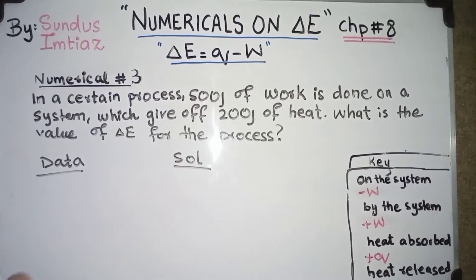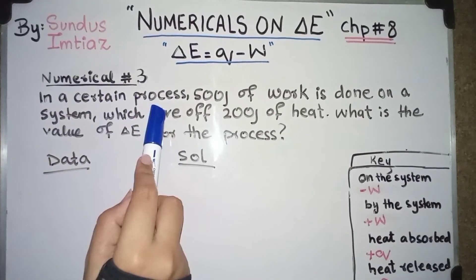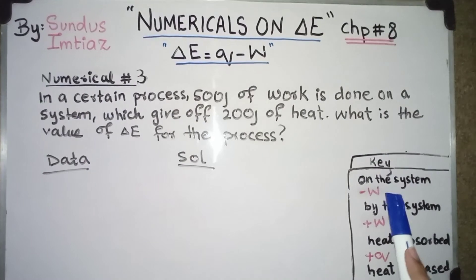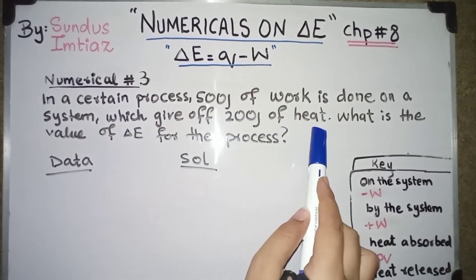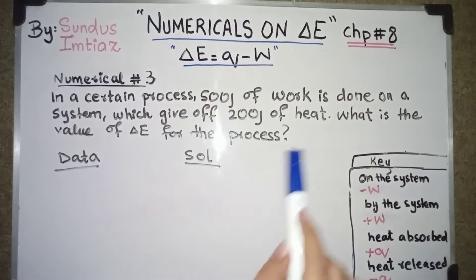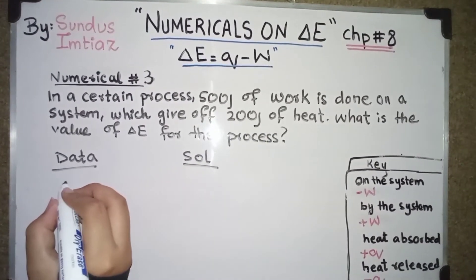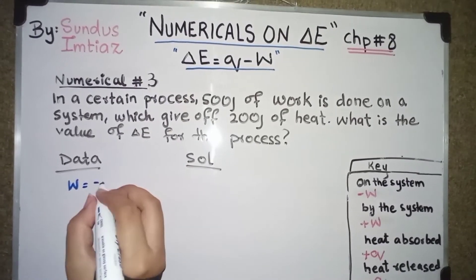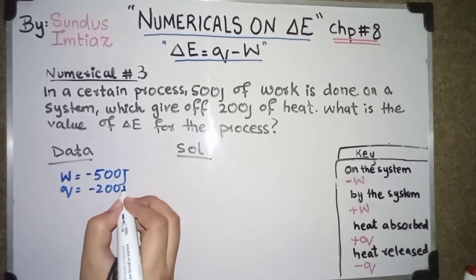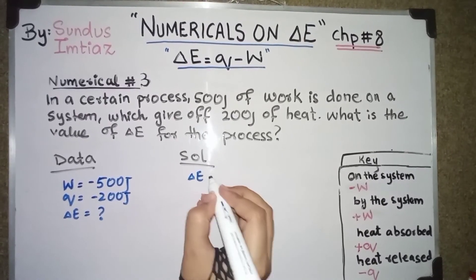Okay. So this is numerical number three, in which they are asking about change in internal energy, of course. Let's read this numerical. In a certain process 500 Joules of work is done on a system. So work is done on the system. It means the work would be negative. And which give off 200 Joules of heat. They are saying that heat is given off, means heat is released. So whenever heat is released, the Q would be negative. What is the value of change in internal energy for the process? Let's write this data. In which W, work, is minus 500 Joules. While Q is minus 200 Joules.